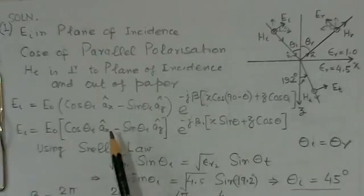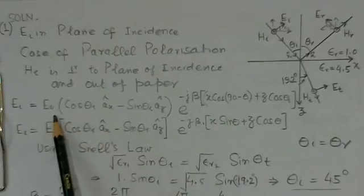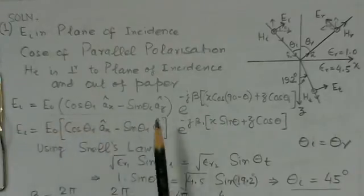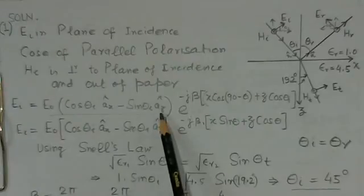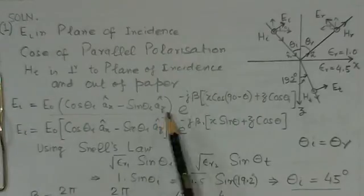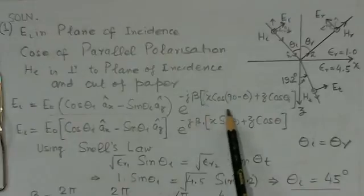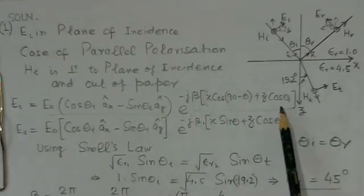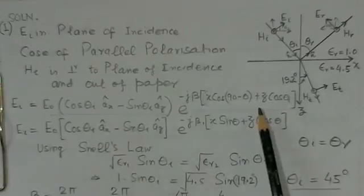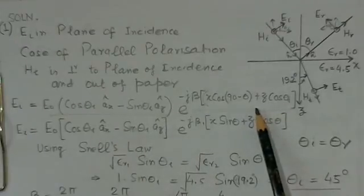E_I basically will consist of two parts. One is this part, which consists of the field components in the plane of incidence. And this part gives the direction of the wave propagation. So both these parts need to be evaluated and we will see one by one. The E_0 is the field at the boundary.